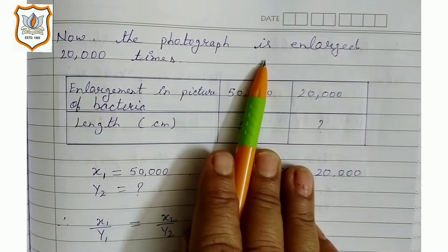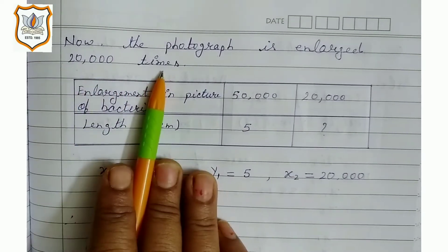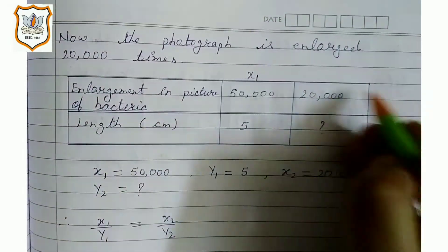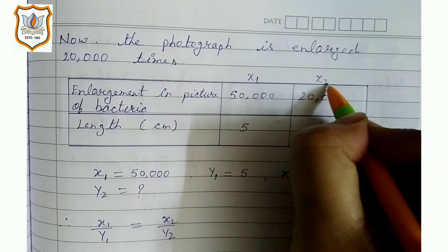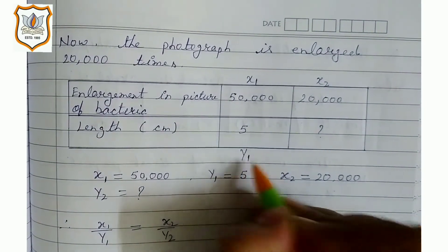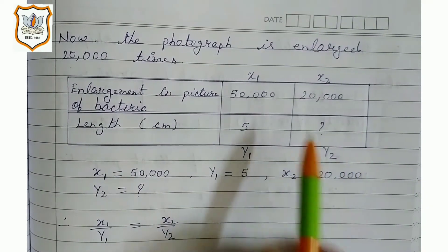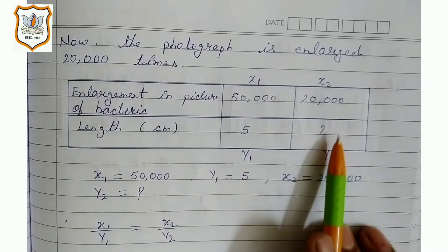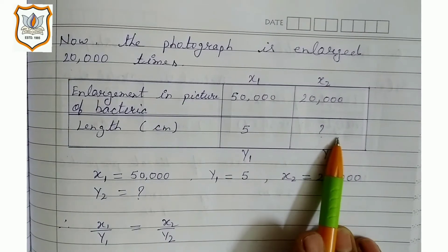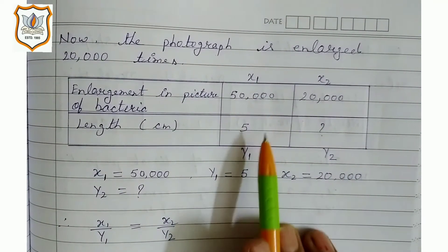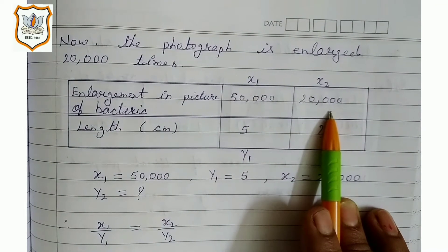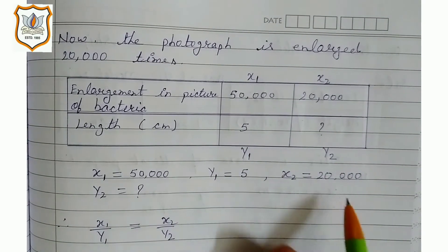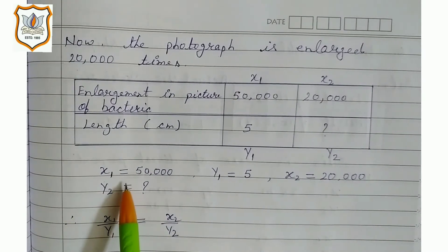Now the photograph is enlarged 20,000 times. We draw a table: 50,000 is x1 and 20,000 is x2; 5 is y1 and we find y2. Now we find: if we enlarge and zoom in 20,000 times, what will the length be? If we zoom in 50,000 times the length is 5 cm; if we zoom in 20,000 times the length will decrease. So this is the case of direct proportion.